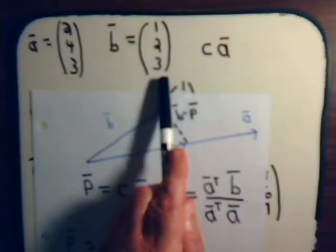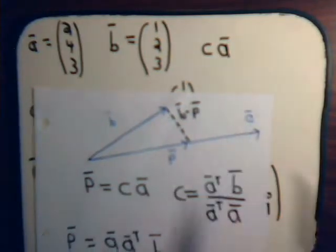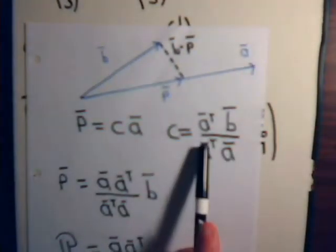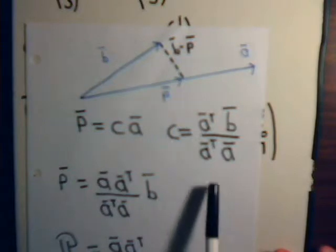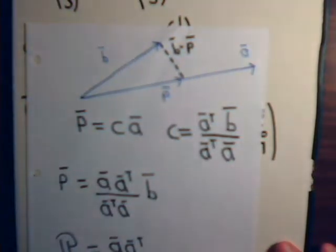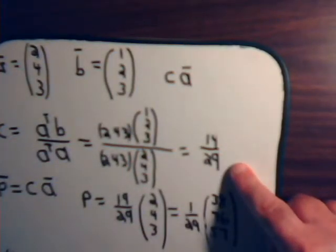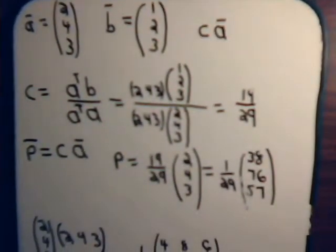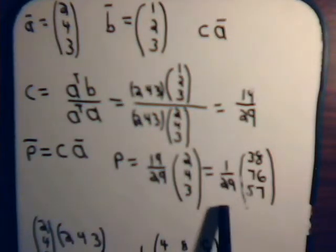Here, vector B is (1, 2, 3). Vector A is (2, 4, 3). The projection vector P, this, is just some scalar times A. And that scalar is this. It is what? It's the inner product of vector A with vector B, divided by the magnitude squared of vector A. So, this is just going to be some number times vector A. And what did that number come out to be? It was 19 over 29. So, the projection vector P is equal to 19 over 29 times the vector A, which gave us this expression.